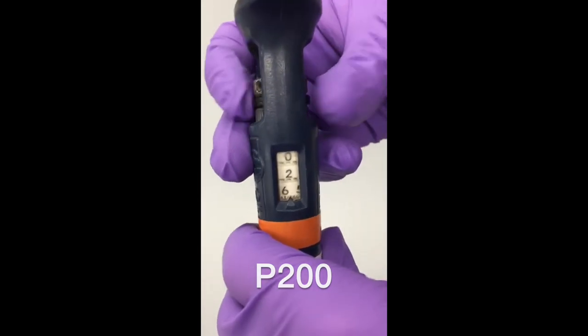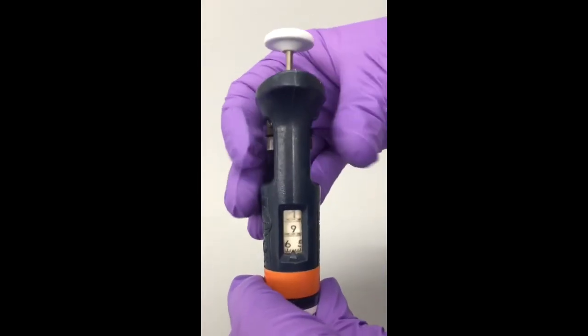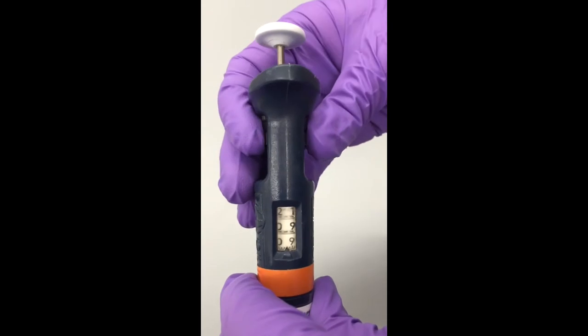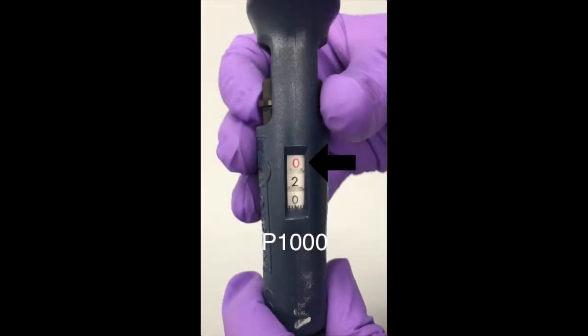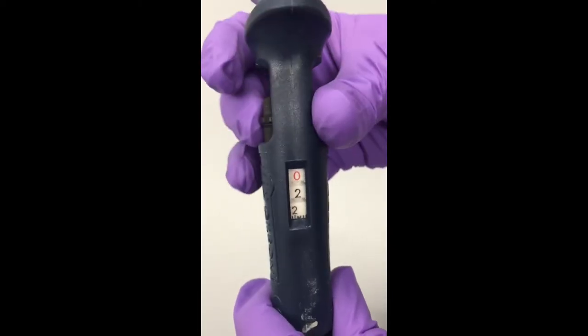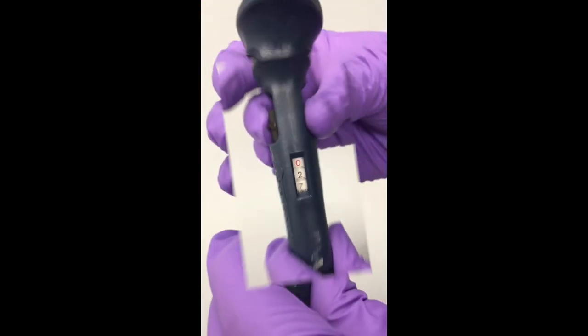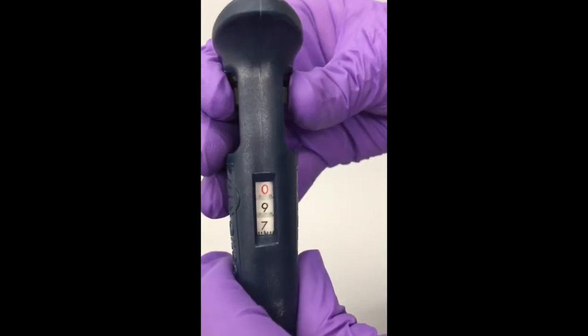The P200 is very easy and reads simply as is. For the P1000, the red number actually indicates the thousands place, so this number reads 200. As you turn the adjustment knob, the volume display increases by tens.